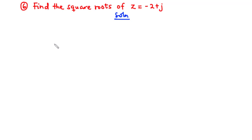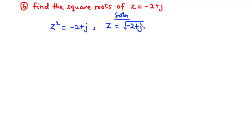To solve this question, the first thing you need to realize is that the square root of z equals negative two plus j can be represented as z² equals negative two plus j. The exponent basically tells us the number of solutions we are going to get. Since we have z to the power two, it means we are going to get two solutions at the end.